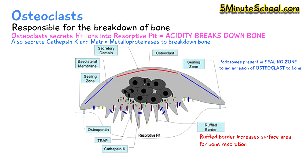The components of bone which are broken down are taken up by the osteoclasts and released to the rest of the body via the secretory zone of the osteoclast.